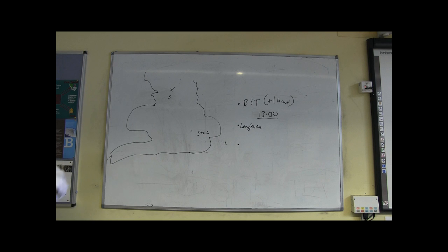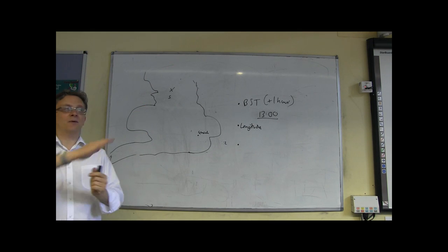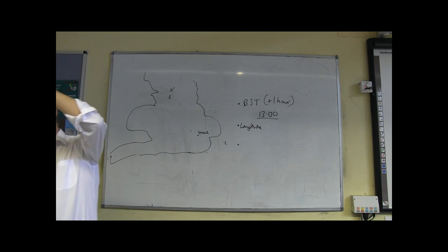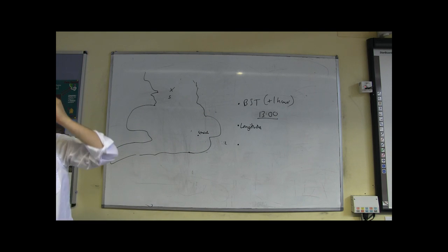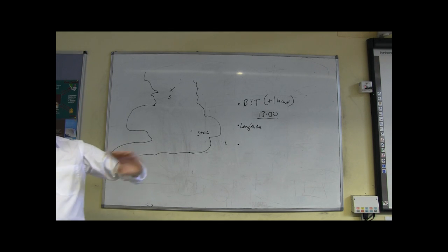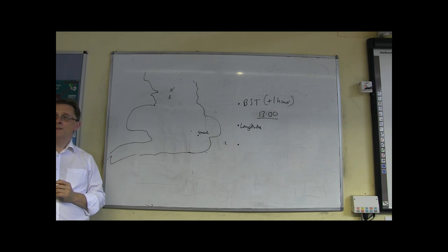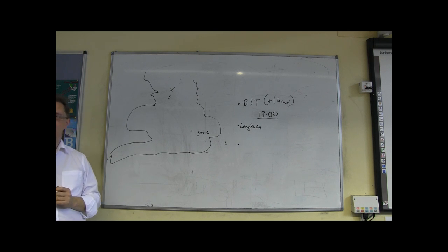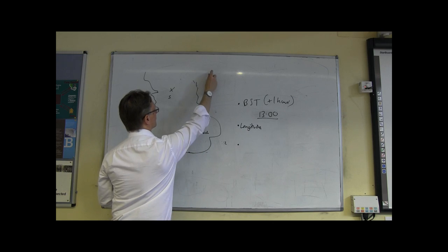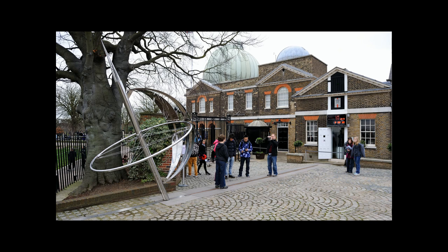Let's suppose we went outside, did our shadow stick experiment, it worked really well. At the instant we get our shortest shadow, we phone up a school in London. What are they going to say? Is that going to be different because they have a longitude of zero? As you may know, Greenwich and points on the Greenwich Meridian have a longitude of zero degrees.